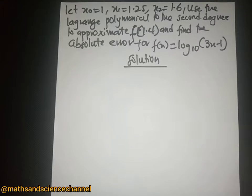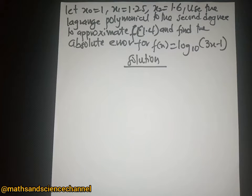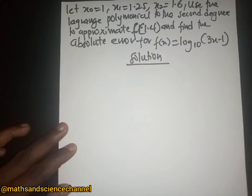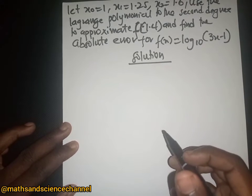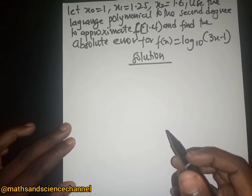Hello students, welcome once again to another section. This time we have a polynomial question. We are going to use the Lagrange polynomial to the second degree to approximate f(1.4), and also find the absolute error for the function f(x) = log base 10 of (3x - 1).